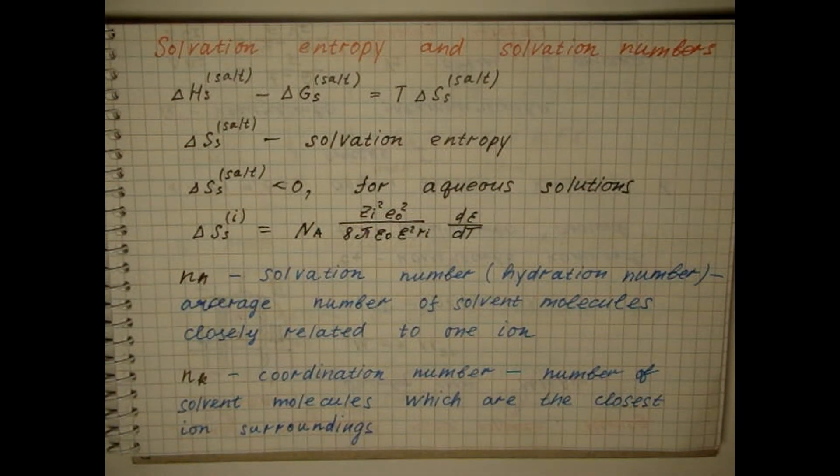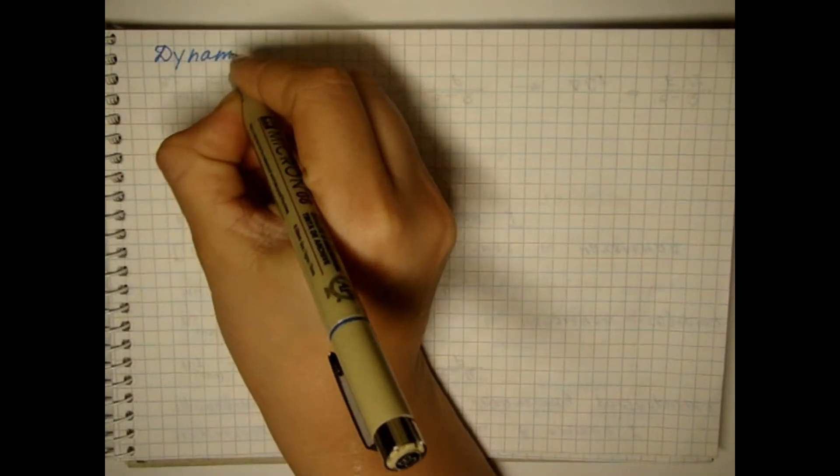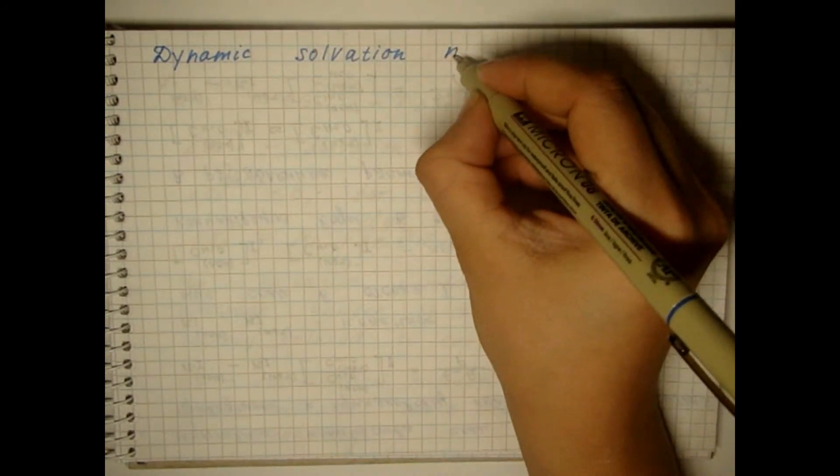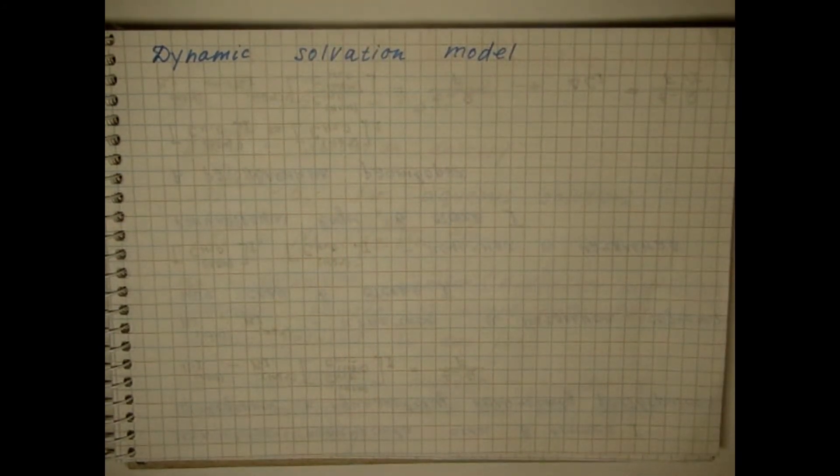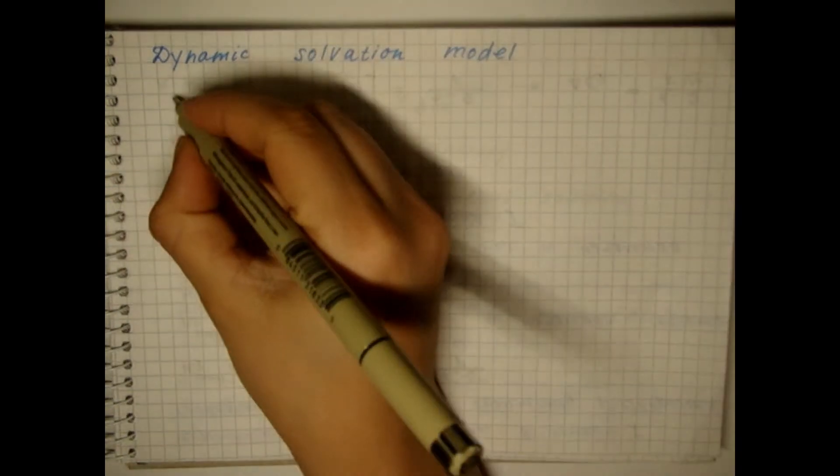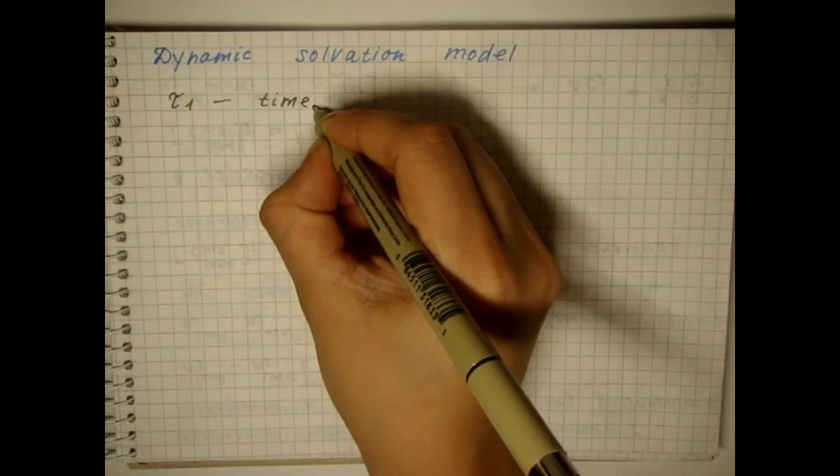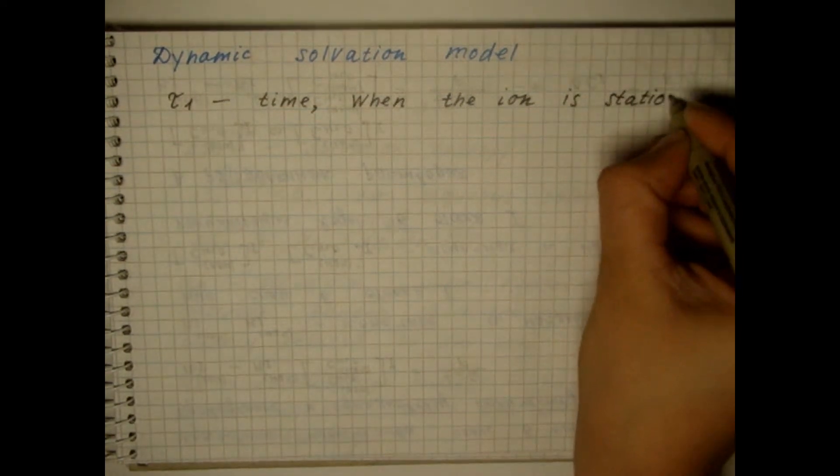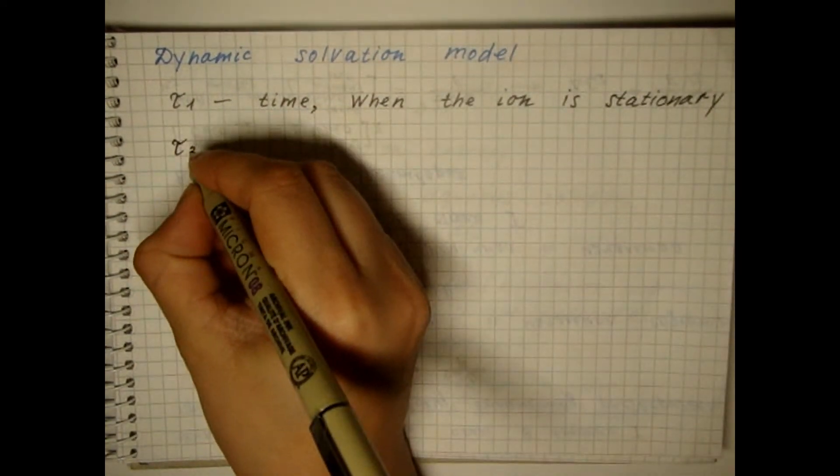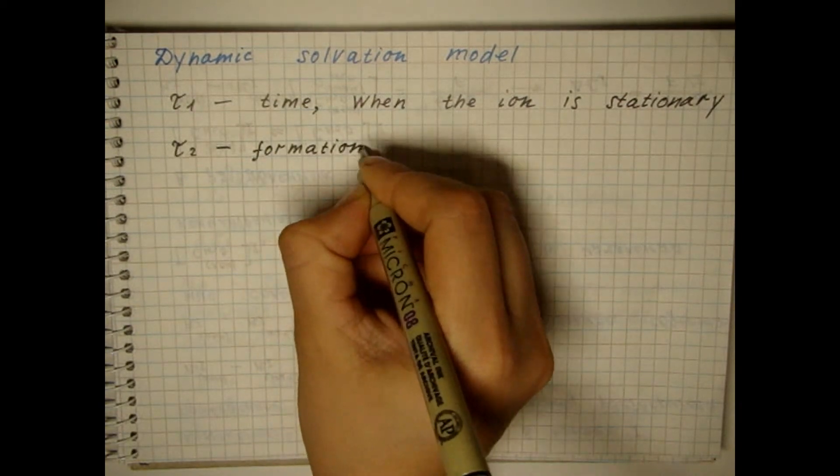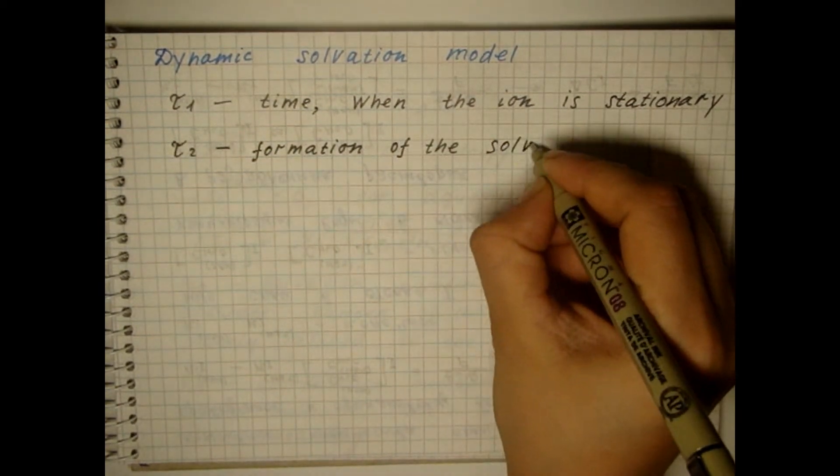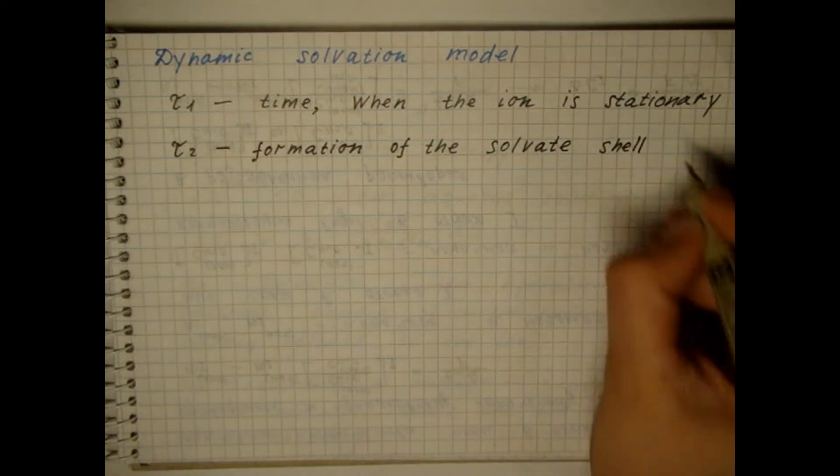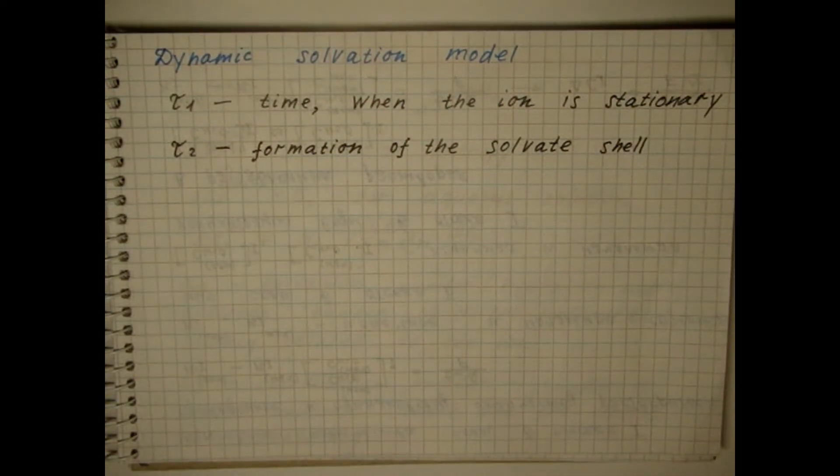Why is this happening? Let's consider the dynamic solvation model proposed by Samoilov. All particles of the solution are in continuous chaotic motion. Let's suppose that T1 is an average time during which the ion is stationary, and T2 the time required for the solvent dipole located near the ion to break the bond with other dipoles, solvent molecules, change its orientation, and become part of the solvation shell of the ion.